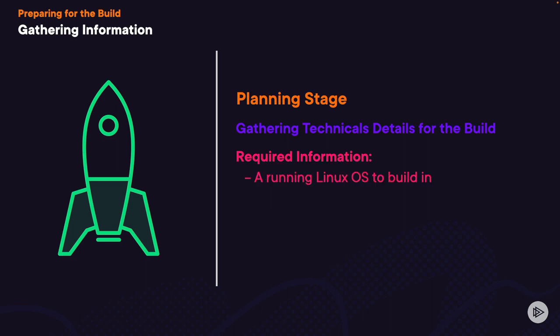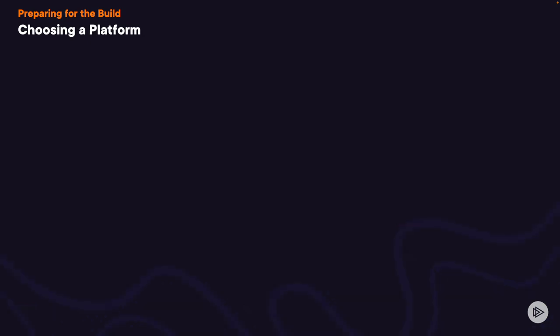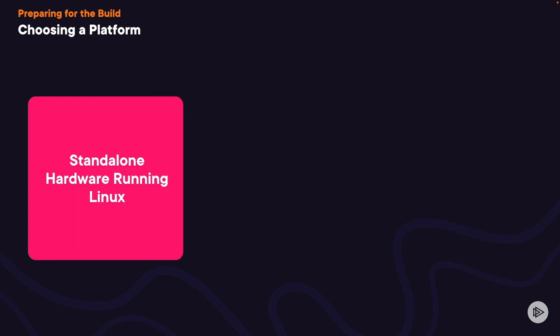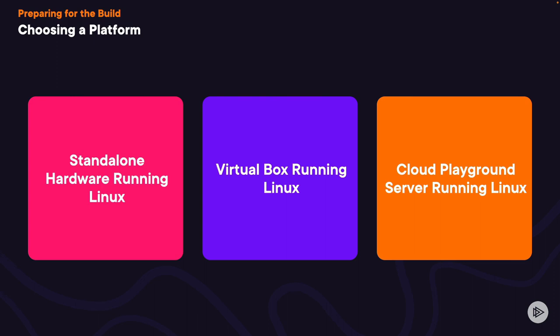You'll need a system running a Linux OS to build on, at least 12GB of storage, access to the command line, and a user account with sudo root privilege. You can use a standalone server running Linux, or a VirtualBox installation or other virtual installation running Linux. You can also use one of our Cloud Playground servers — it comes with 20GB of storage, command line access, and a user account with sudo access.